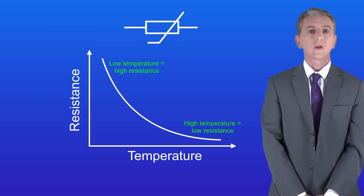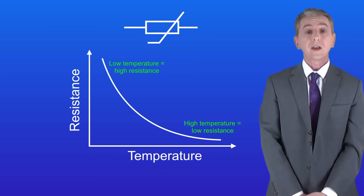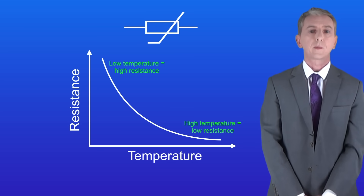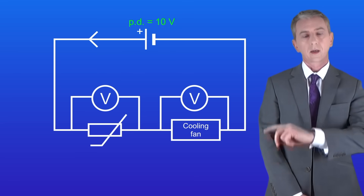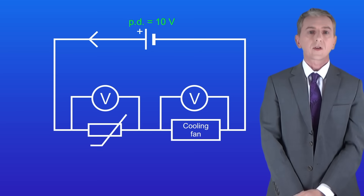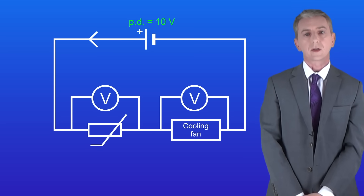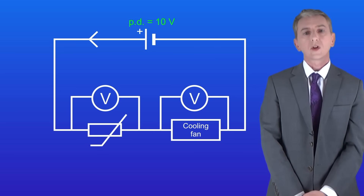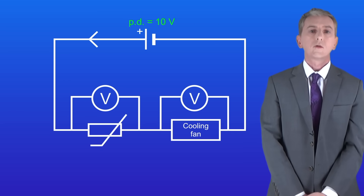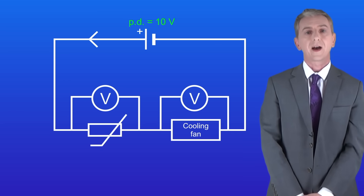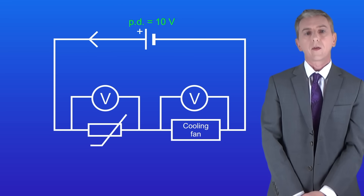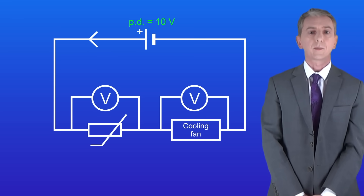Thermistors are really useful as thermostats — devices which turn appliances on or off depending on the temperature. Take a look at this circuit, which we'd find inside computers. Computers have a big problem in that they can get hot. To reduce this, computers usually have a fan which switches on and cools the computer back down when the temperature rises.